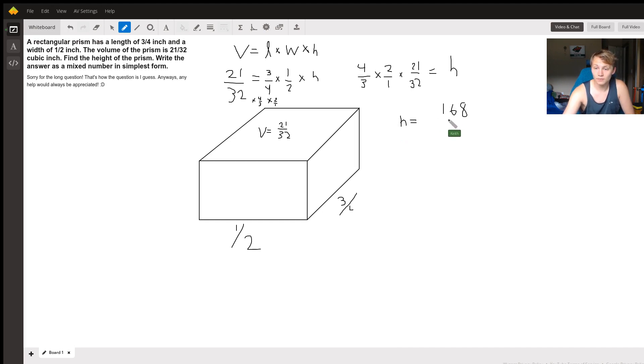Now this is almost our answer. This would give us the right answer, but it's asking us for the answer as a mixed number in simplest form, which means that we can't have this, what's called an improper fraction, where the numerator is larger than the denominator.